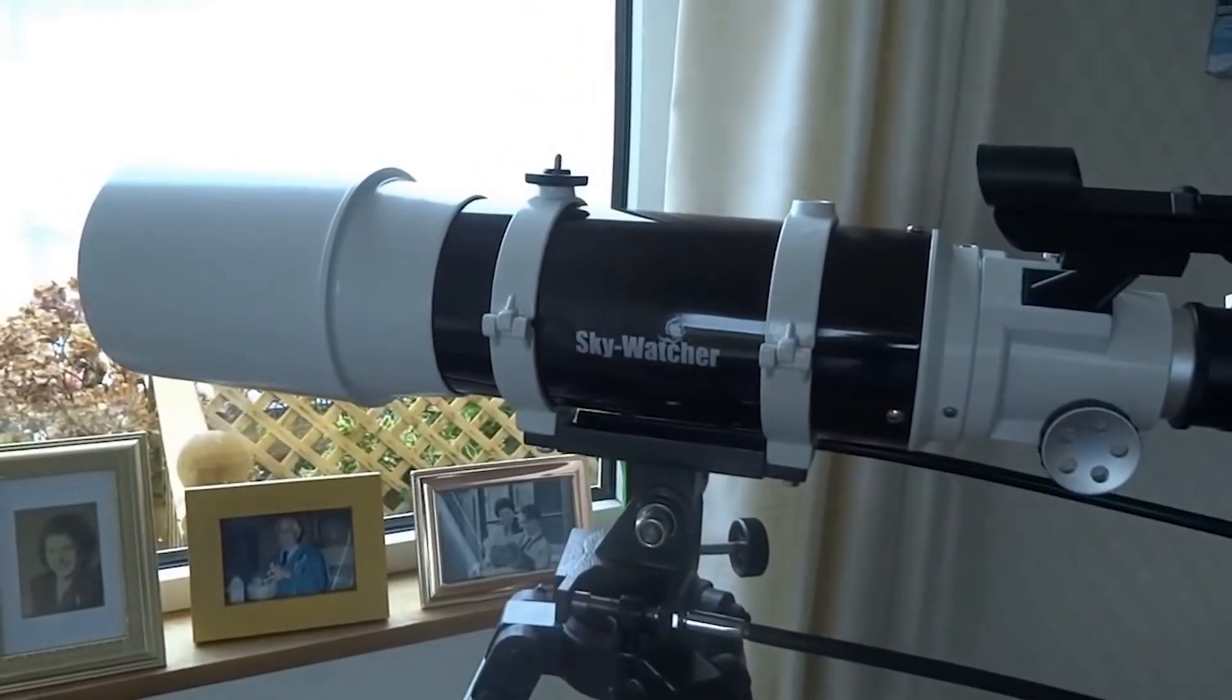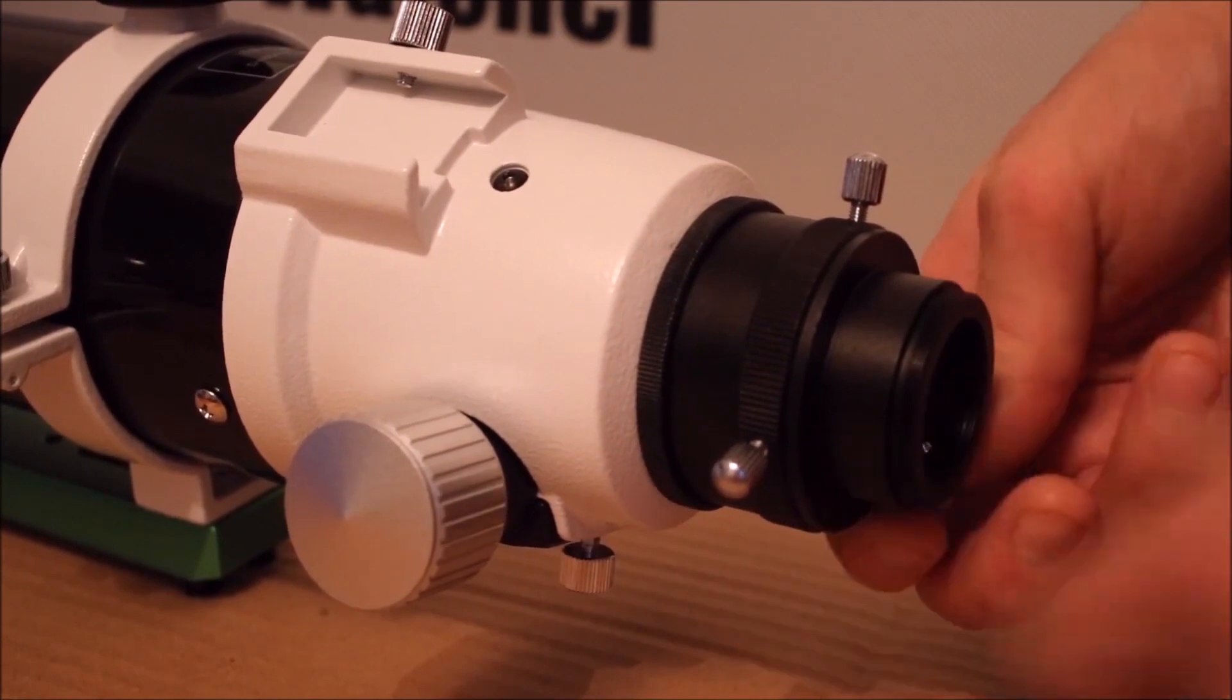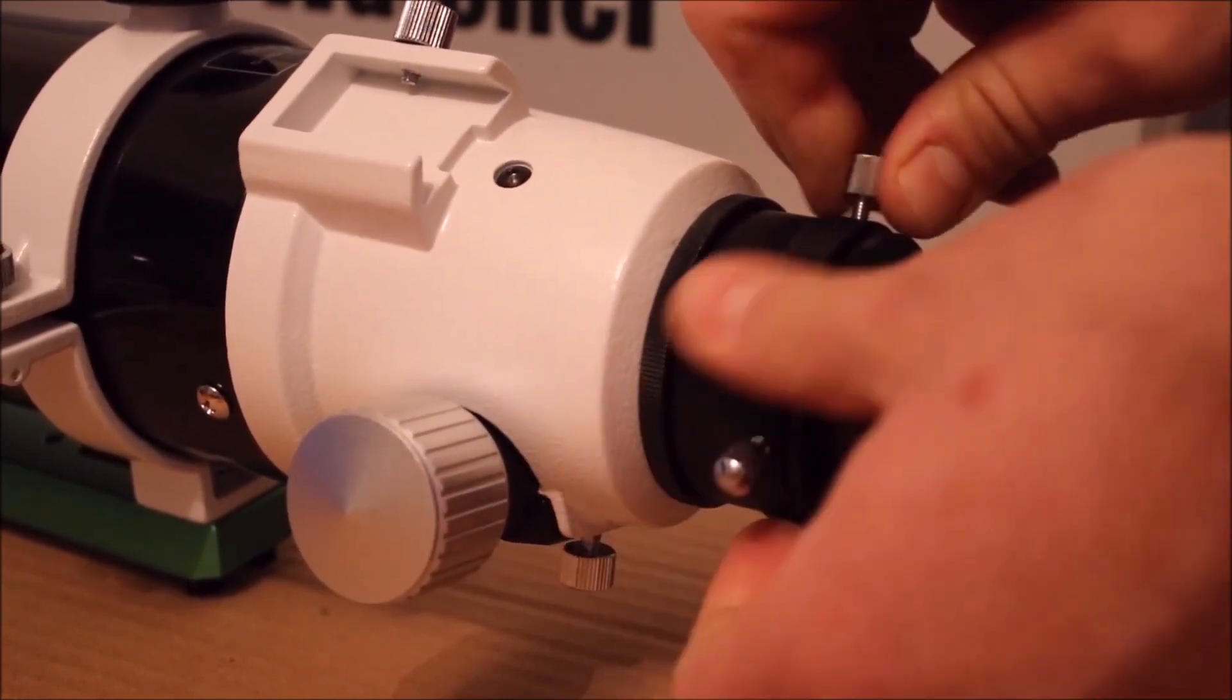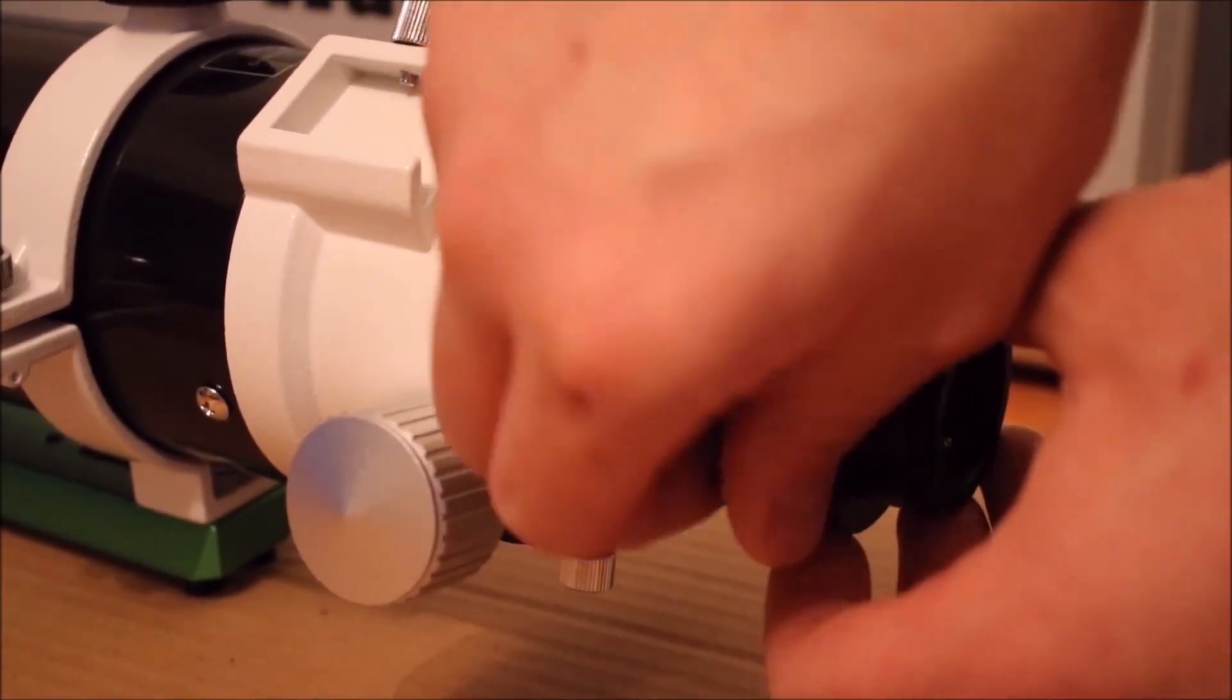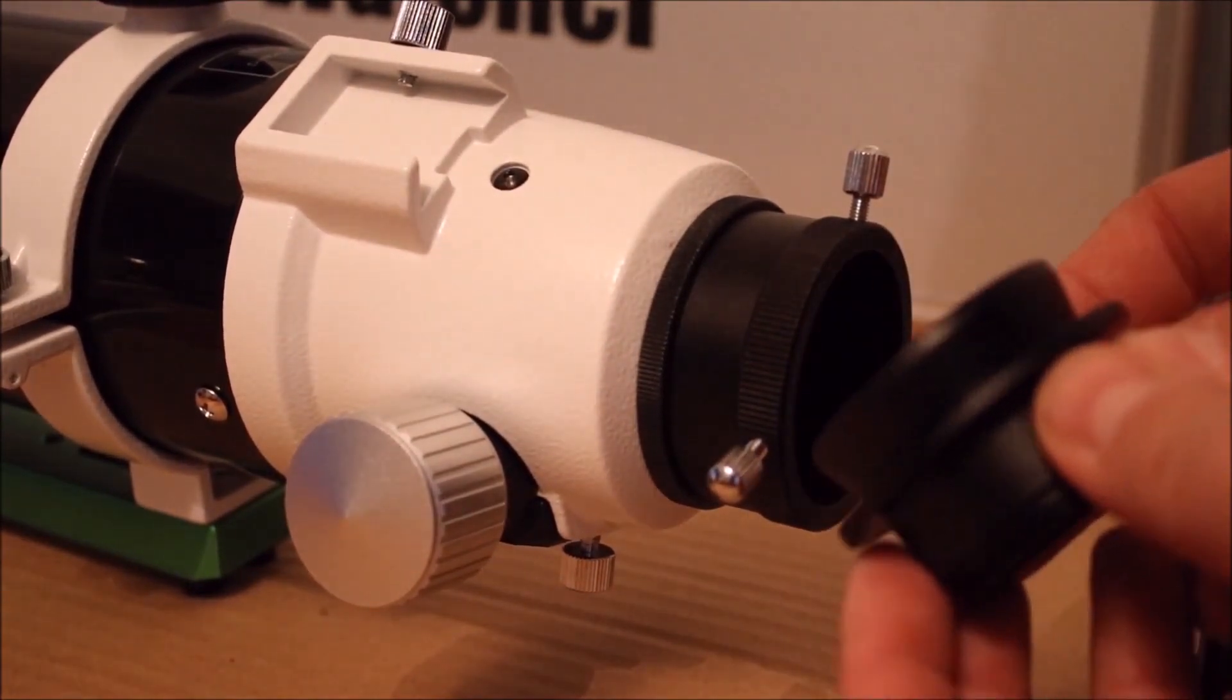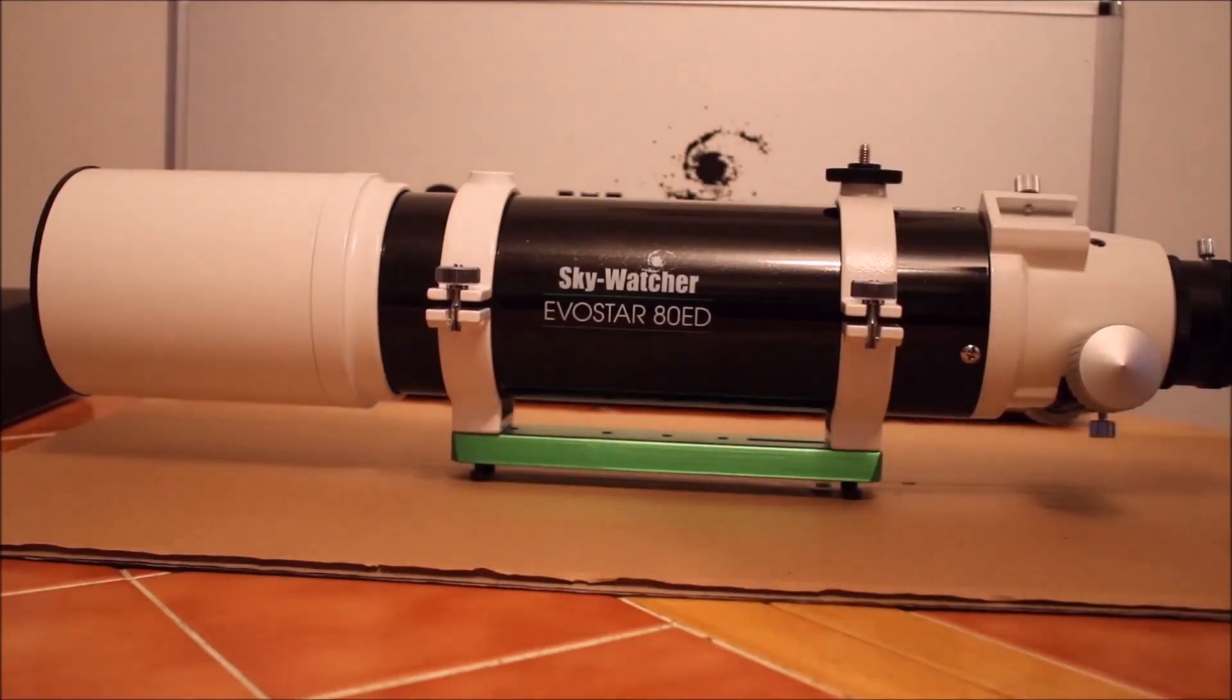2. Skywatcher Pro-ED 120mm Doublet APO Refractor. The Skywatcher Pro-ED 120mm Doublet APO Refractor has one of the best lenses. Even though it comes without a mount, it is still comfortably a four-figure purchase because its 120mm, 4.72-inch objective lens is large for a refractor and made to a very high quality.